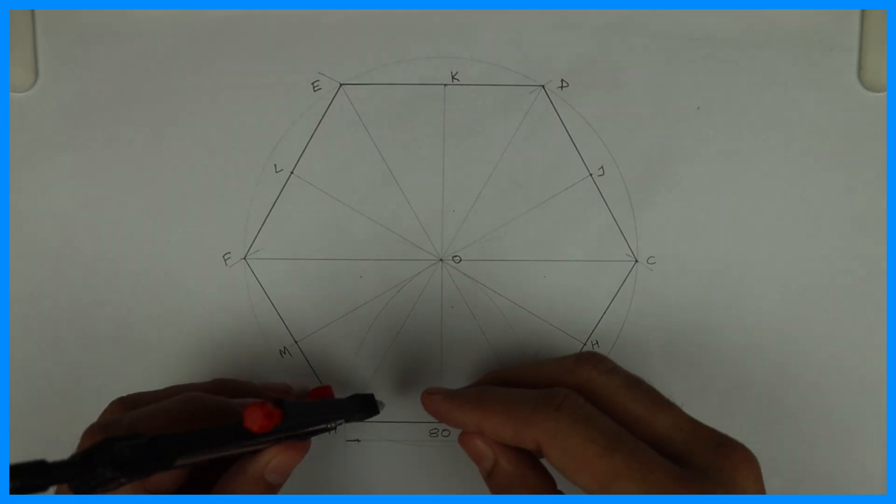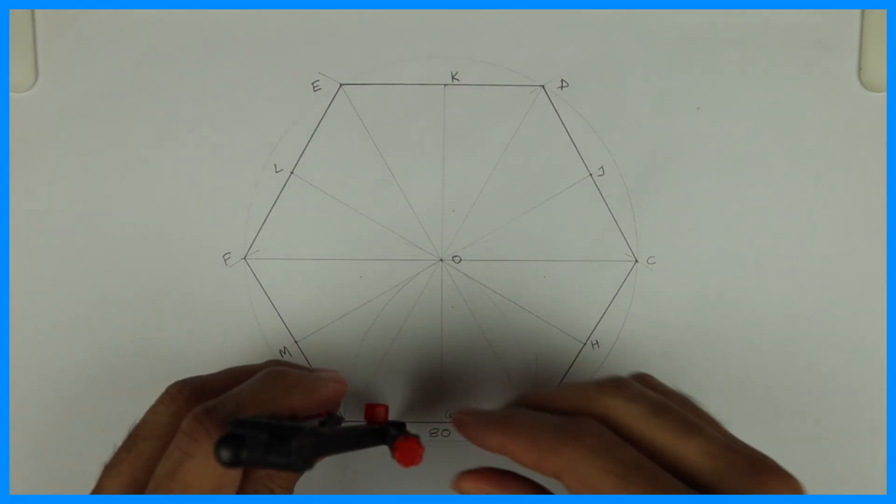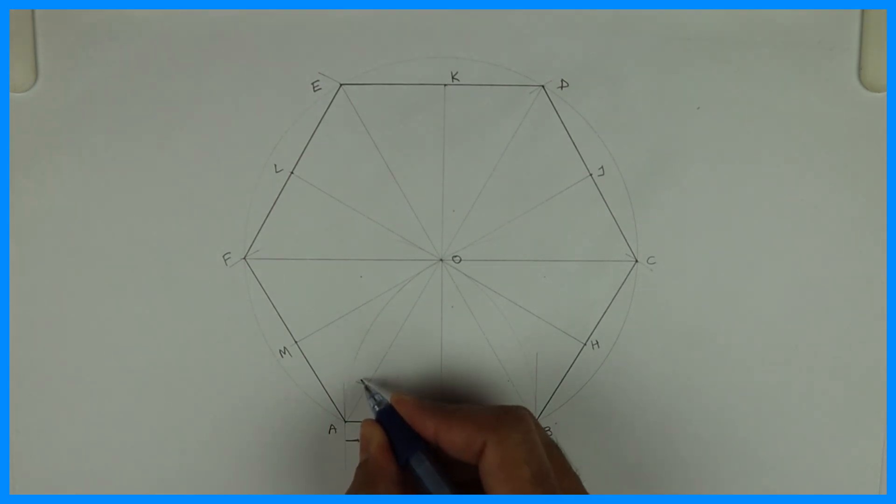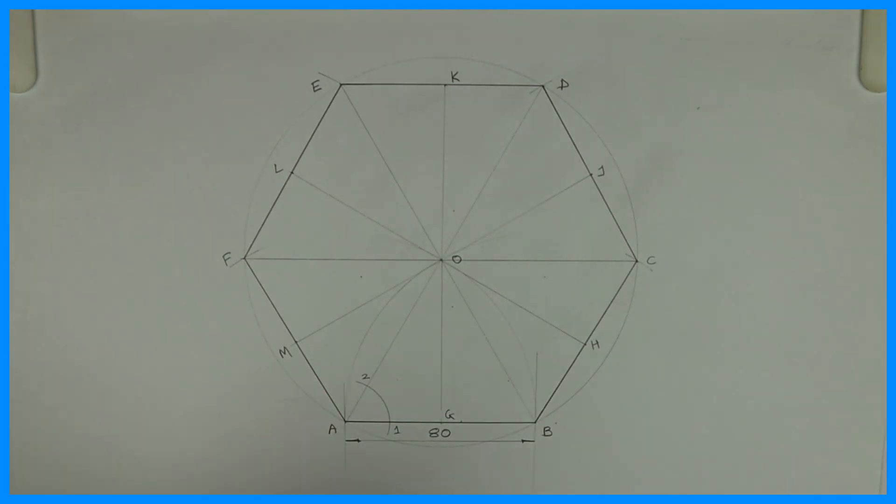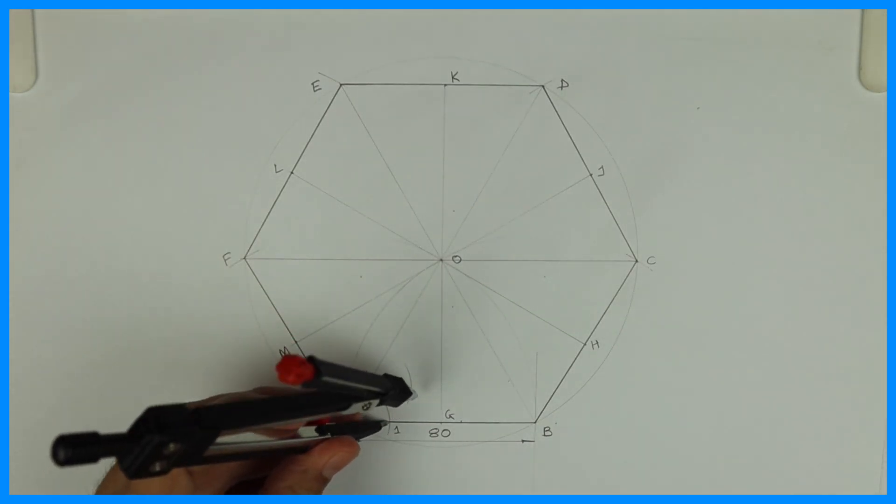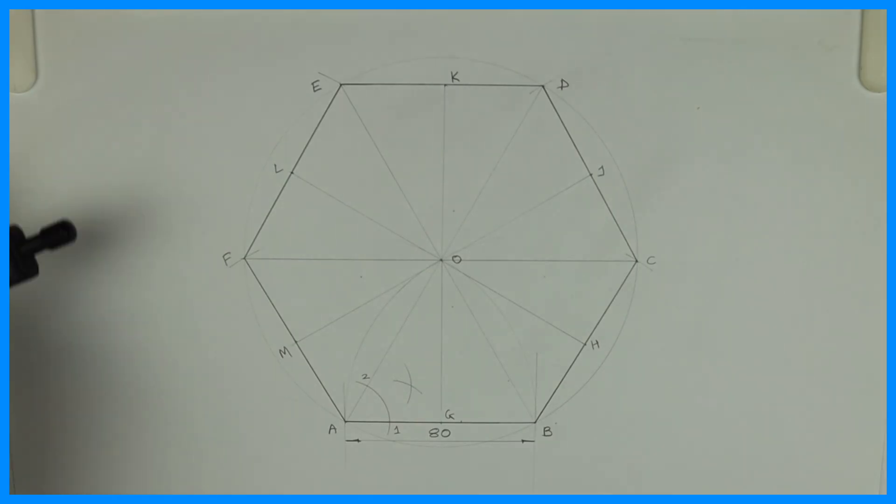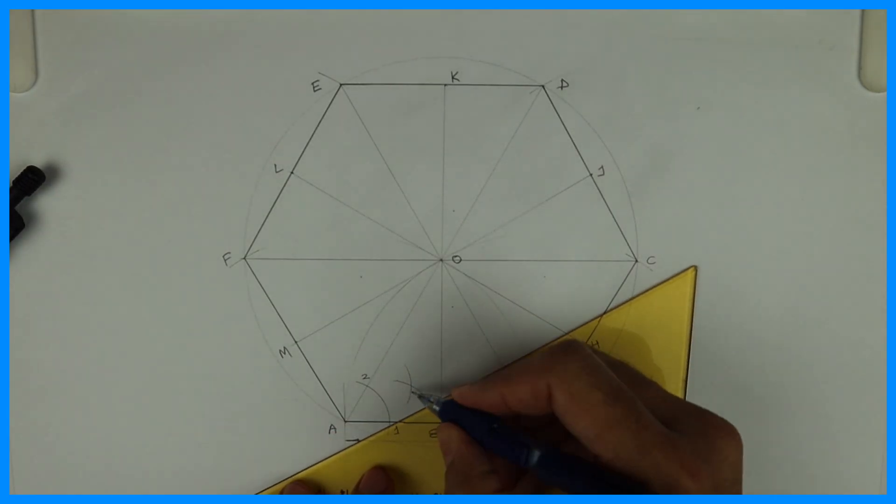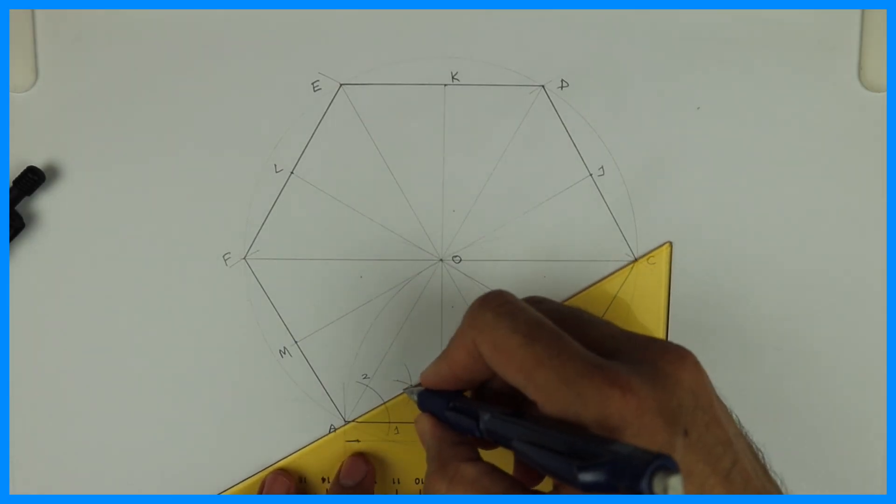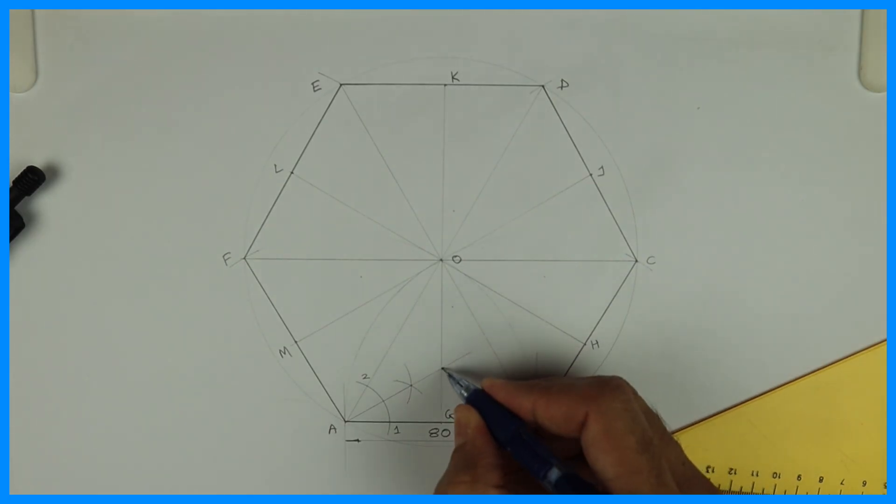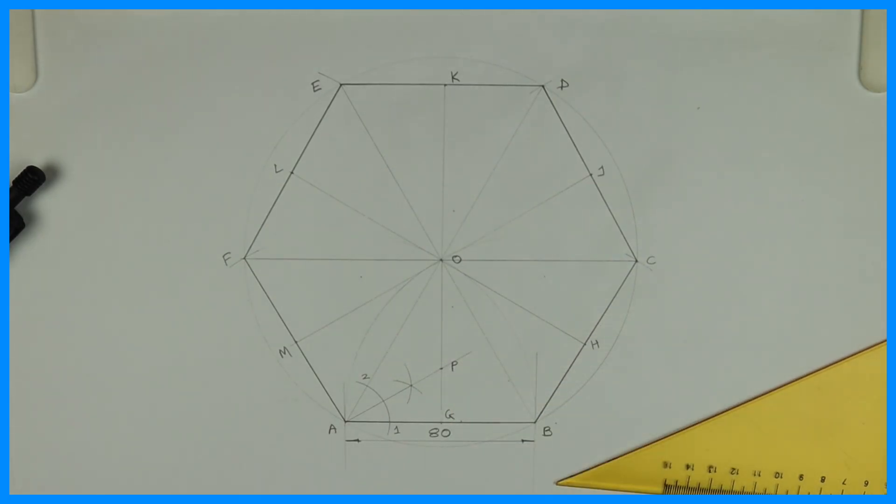Now we need to draw six circles inside all these triangles. So we'll bisect angle OAB. This is 1 and 2. So when you bisect this, this would be somewhere around 30, because the angle is 60. Right? OAB. This is point P.